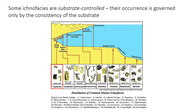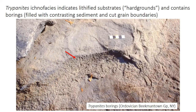Some ichnofacies are more purely substrate-controlled, occurring only on specific kinds of substrates. You've already learned about the Glossifungites ichnofacies, which forms on firm but not lithified substrates, and there's the Toritolites ichnofacies, which forms in wood. The Trypanites ichnofacies forms on hard, lithified substrates — basically rocks or shells. Here's an example of the Trypanites ichnofacies formed on a hard ground, a lithified rock surface where the ocean transgressed over an eroded limestone. The small circular holes near the red arrow are tubular borings belonging to the trace fossil Trypanites.